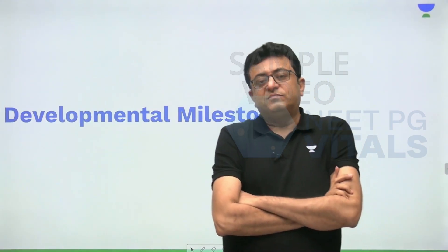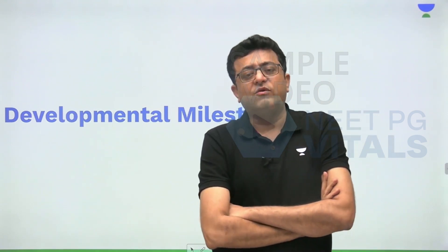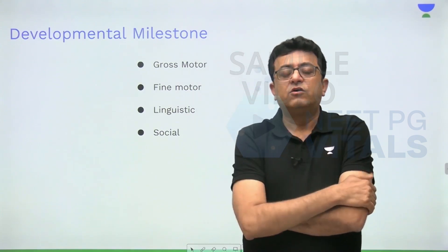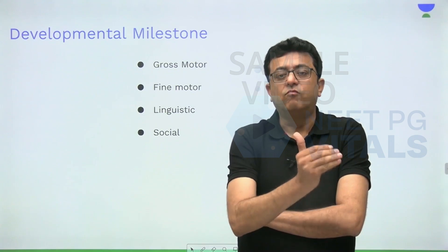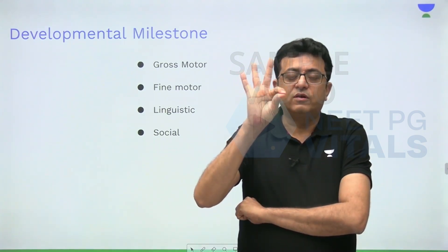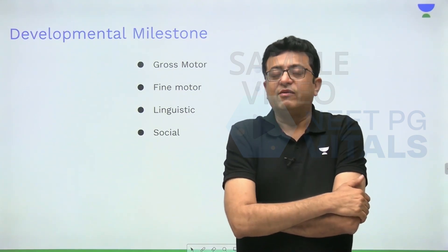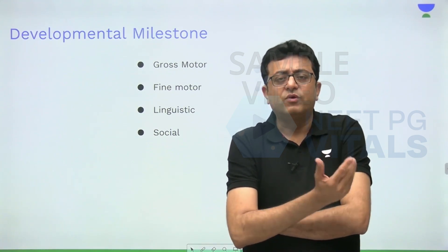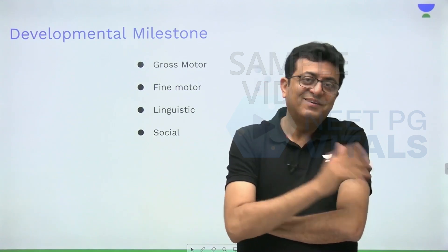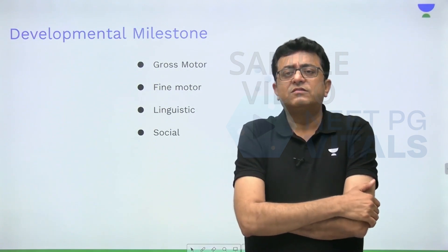Developmental milestone is a very interesting topic. We read about it many times but tend to forget the details. I'll try my best to give you a clear concept of developmental milestones. There are four categories: gross motor — when a child is able to sit, walk, climb stairs, skip, hop, ride a tricycle; fine motor — pincer grasp, throwing, making circles, squares, triangles; linguistic — mama, baba, papa, two words, ten words, stories, poems; and social — social smile, recognizing mother, stranger anxiety, bye-bye, clapping, hugging and kissing parents, toilet training.